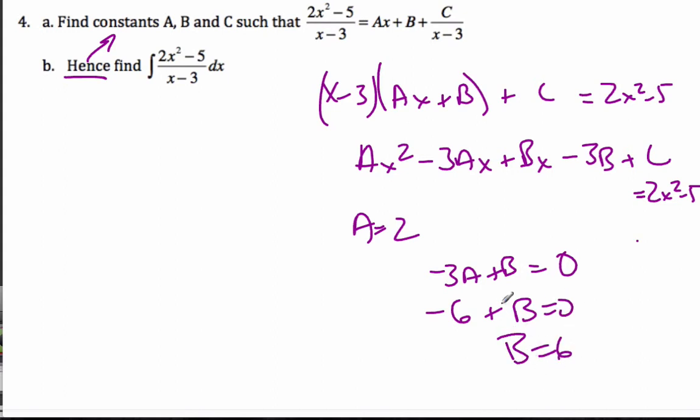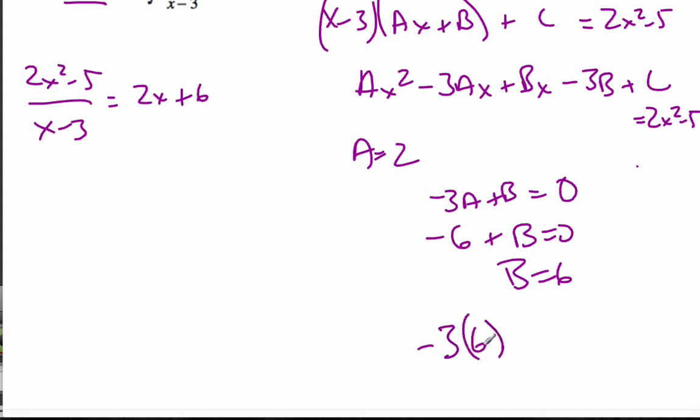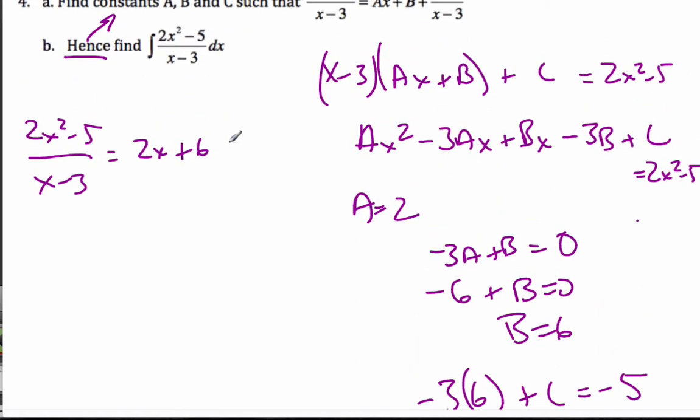And so I know that 2x squared minus 5 over x minus 3 is the same so far as 2x plus 6. And then finally, I know this term here has to be minus 5. I know minus 3B plus C equals minus 5. Well, that's negative 18, so C is minus 5 plus 18, which is simply positive 13. So I know that this then is 2x plus 6 plus 13 over x minus 3.